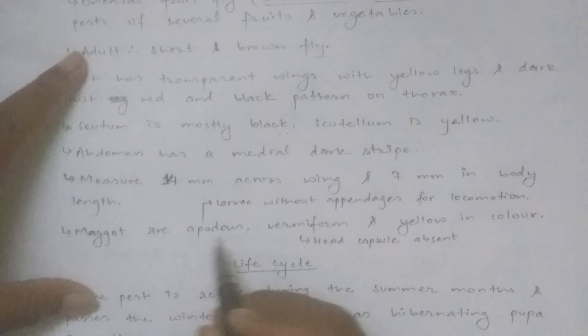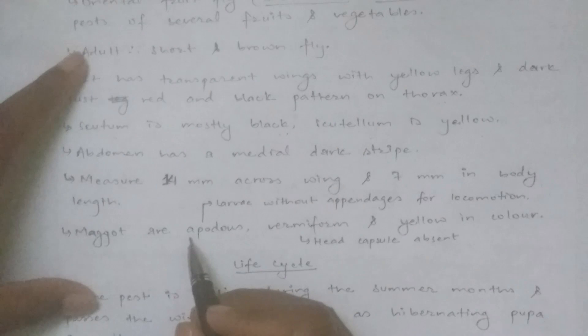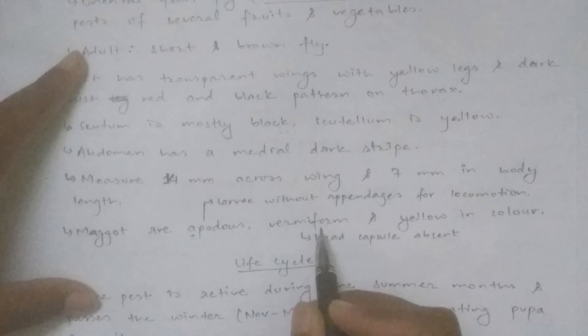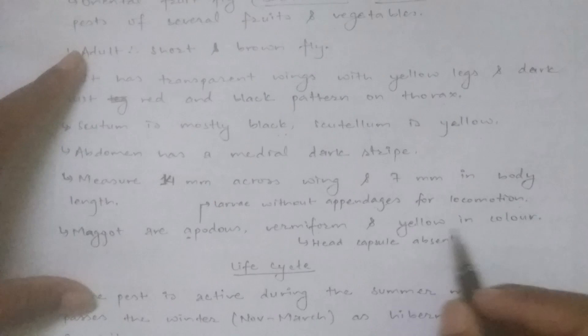The larva is apodus — that is, without appendages for locomotion. The maggot is white with an absent head capsule, and the pupa is yellow in color.